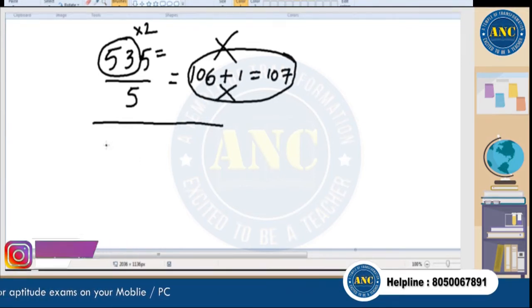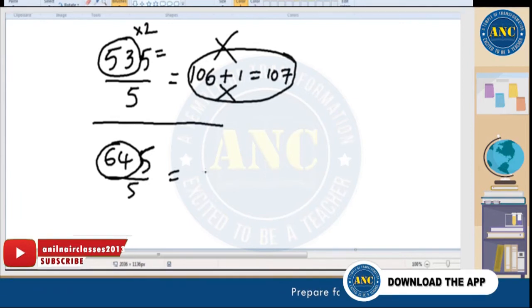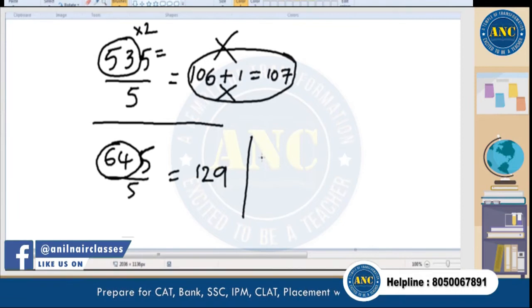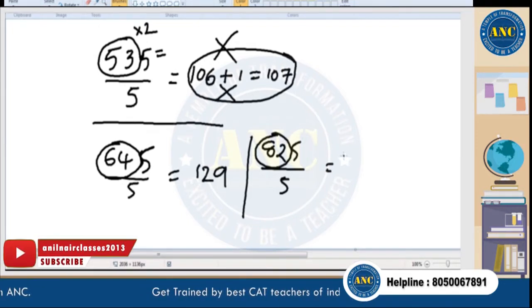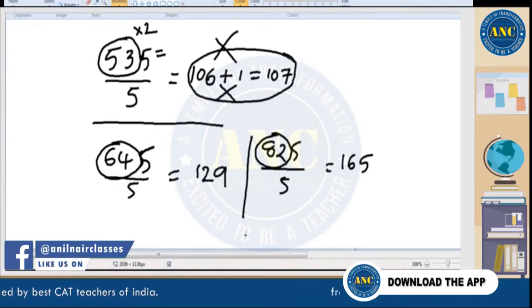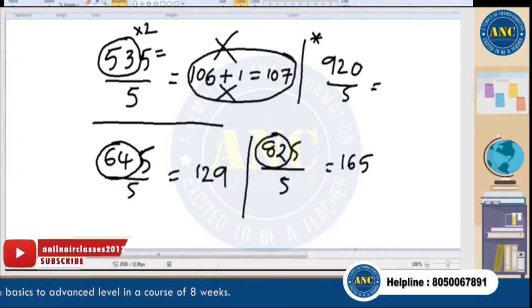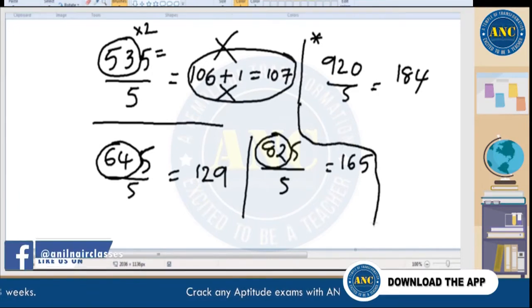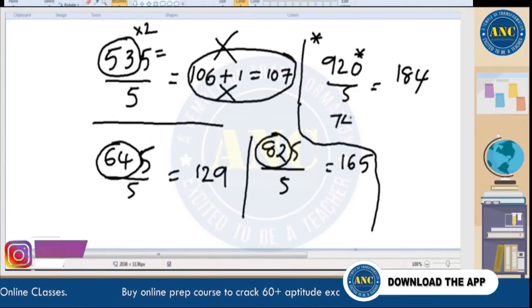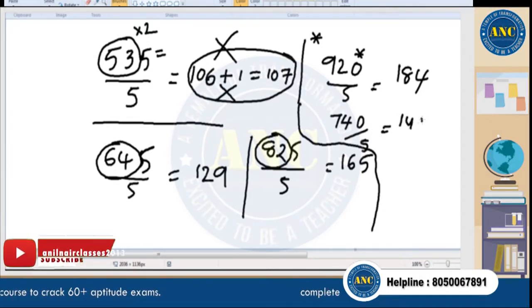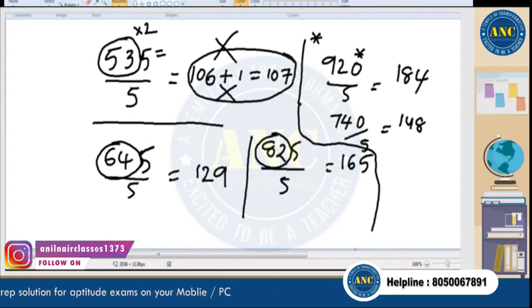For 645 ÷ 5: 64 × 2 = 128, plus 1 = 129. For 825 ÷ 5: 82 × 2 = 164, plus 1 = 165. For 920 ÷ 0: last digit is 0, so 92 × 2 = 184, no addition needed. For 740 ÷ 5: 74 × 2 = 148. When unit digit is 0, it's easier — just multiply the remaining digits by 2.